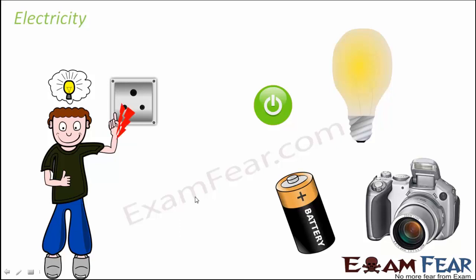Think of devices like a camera or a battery. You would have seen a lot of devices — from torches to computers to cell phones — and all of them have a cell or a battery inside them. These batteries generate electric current; they produce electricity through a setup inside them. In a way, batteries have brought about a revolution in modern technology.